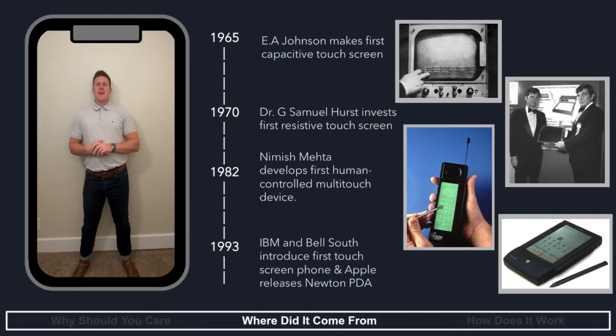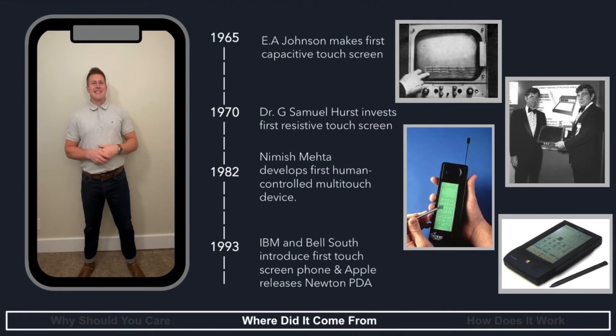In 1965, we have our first sign of touchscreen technology from E.A. Johnson. He makes the first capacitive touchscreen. This uses a layer of electrodes to sense conductivity which comes from the skin of your finger, which I'll explain more about later. Next, in 1970, we have Dr. G. Hurst who makes the first resistive touchscreen. This kind of touchscreen uses two different layers, and when they touch each other, the device senses that and shows where it's being touched.